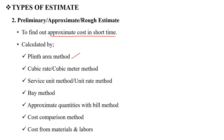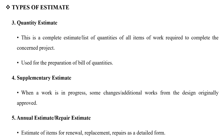The methods for the preliminary estimate include: the Plinth Area method, the Cubic Rate or Cubic Meter method, the Service Unit or Unit Rate method, the Bay method, the Approximate Quantity with Bill method, the Cost Comparison method, and the Cost from Materials and Labor method.